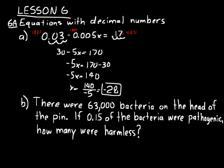Look at practice problem B. It says that there were 63,000 bacteria on the head of the pin. If 0.15 of the bacteria were pathogenic, how many were harmless? So we want to know how many bacteria were harmless here. We have a decimal part of a number problem basically because they said that 0.15 were pathogenic.